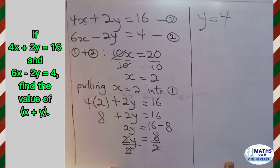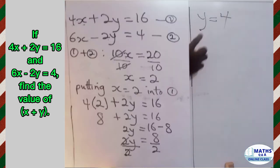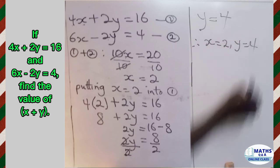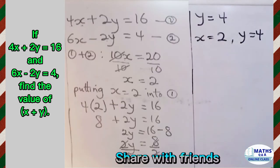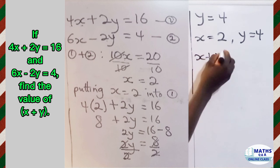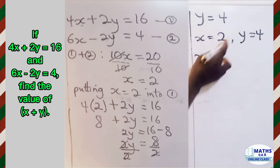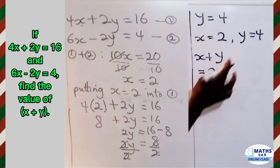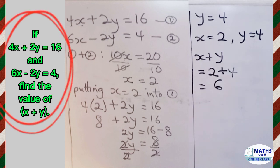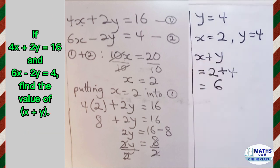So the values are x equal to 2 and y equal to 4. Therefore x equals 2 and y equals 4. The question asks for the value of x plus y, so we write 2 plus 4, which gives us 6. Therefore, given 4x plus 2y equal to 16 and 6x minus 2y equal to 4, the value of x plus y is 6.